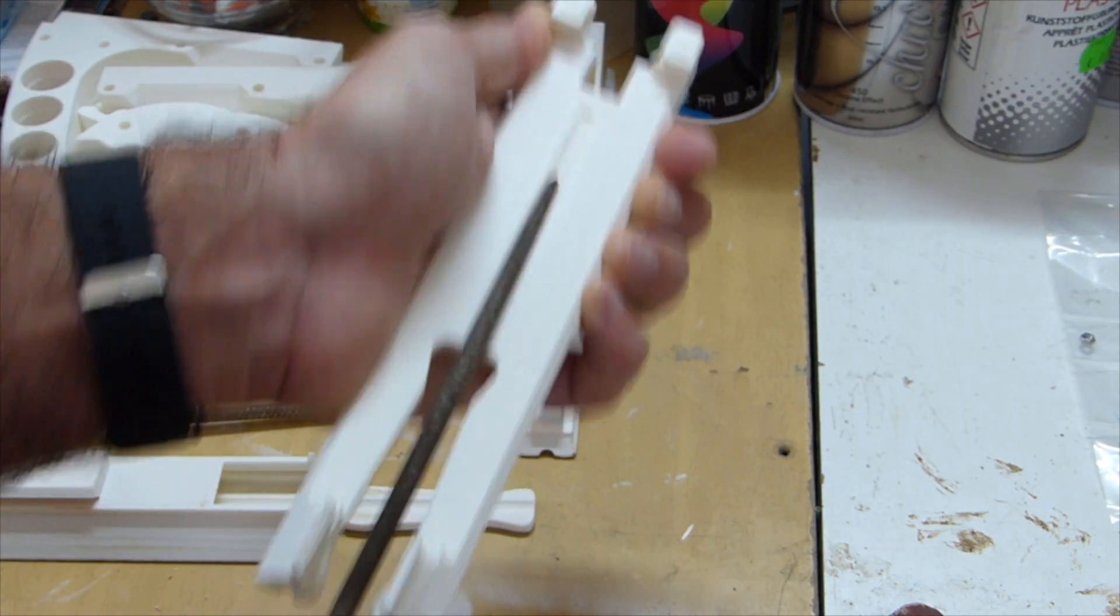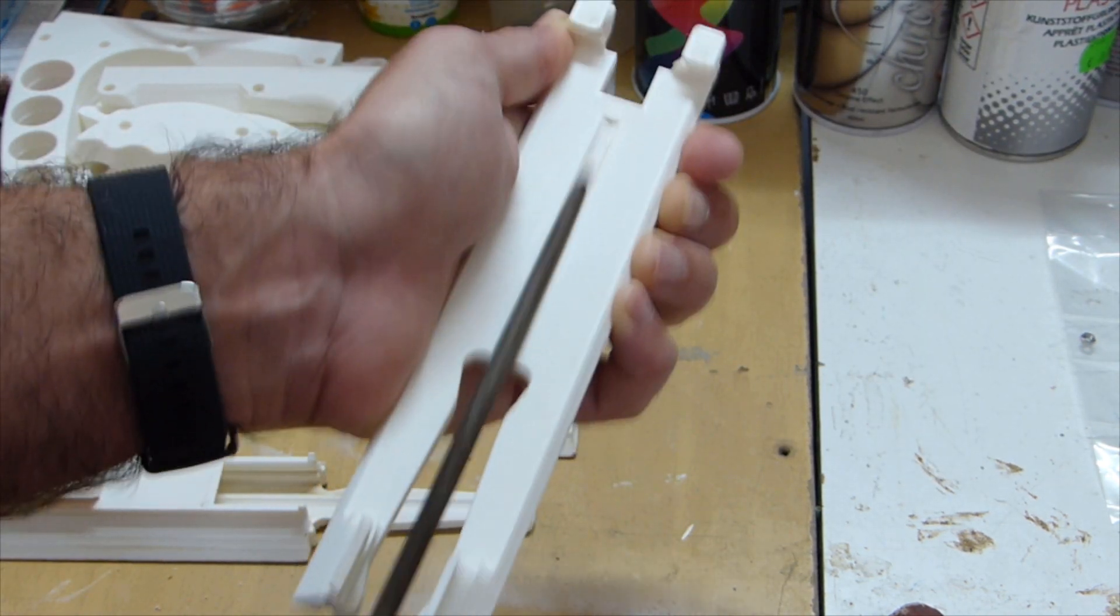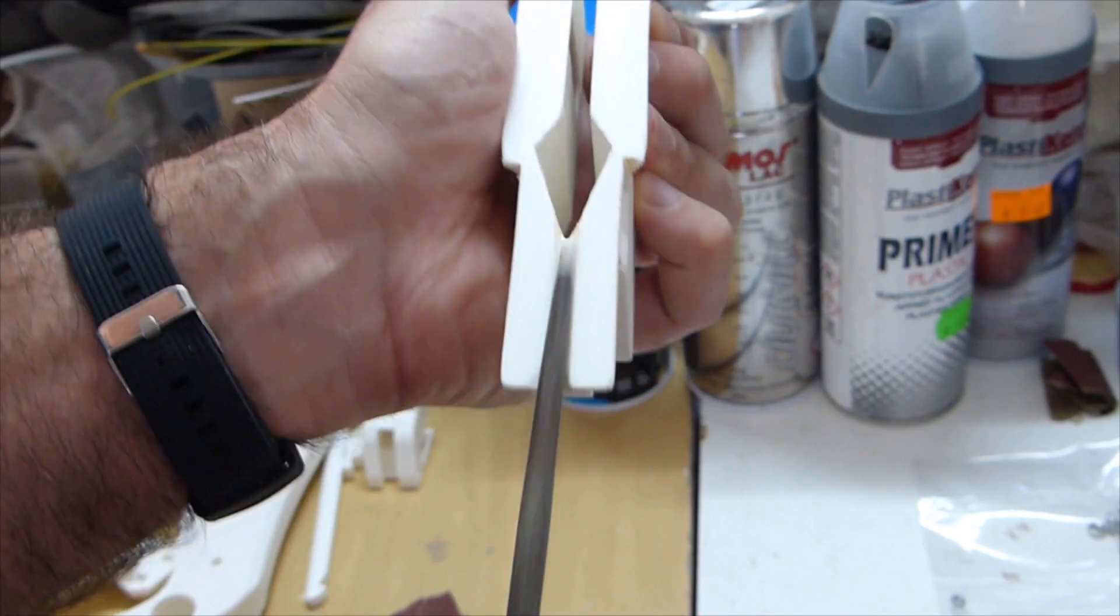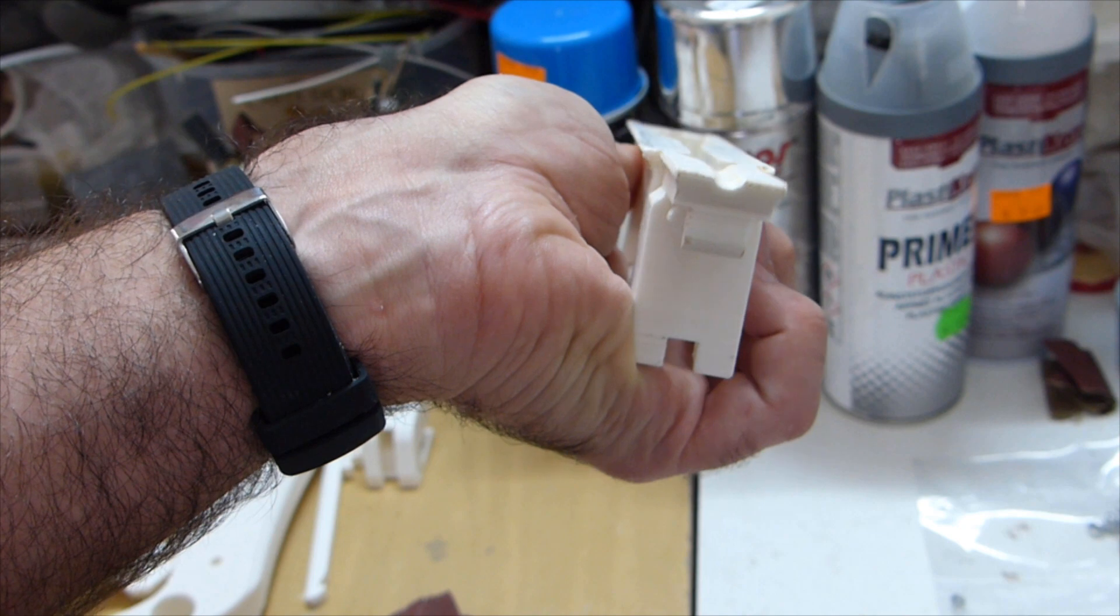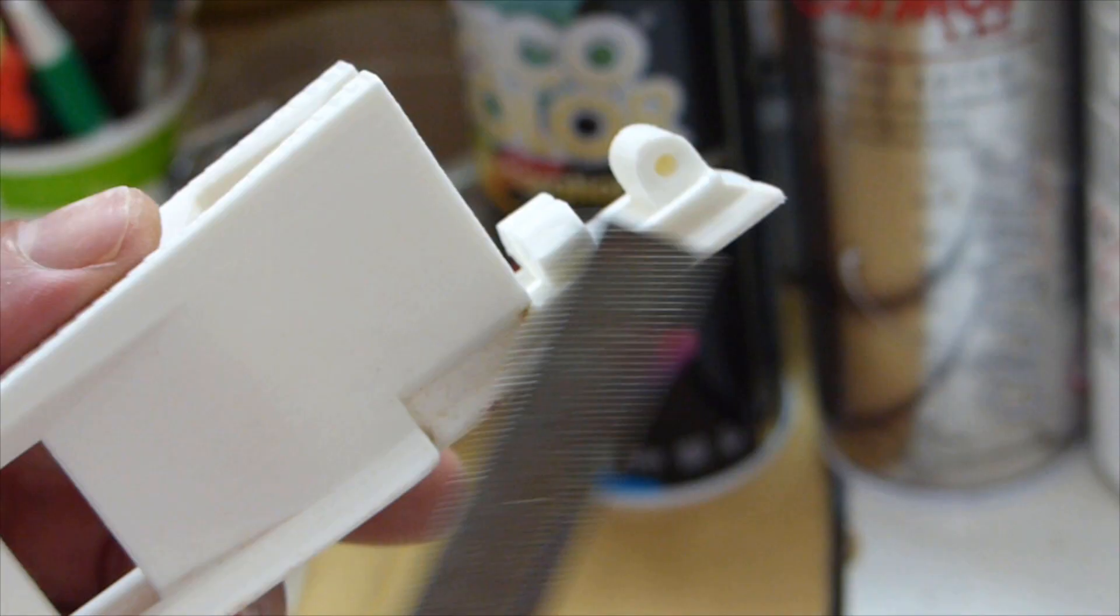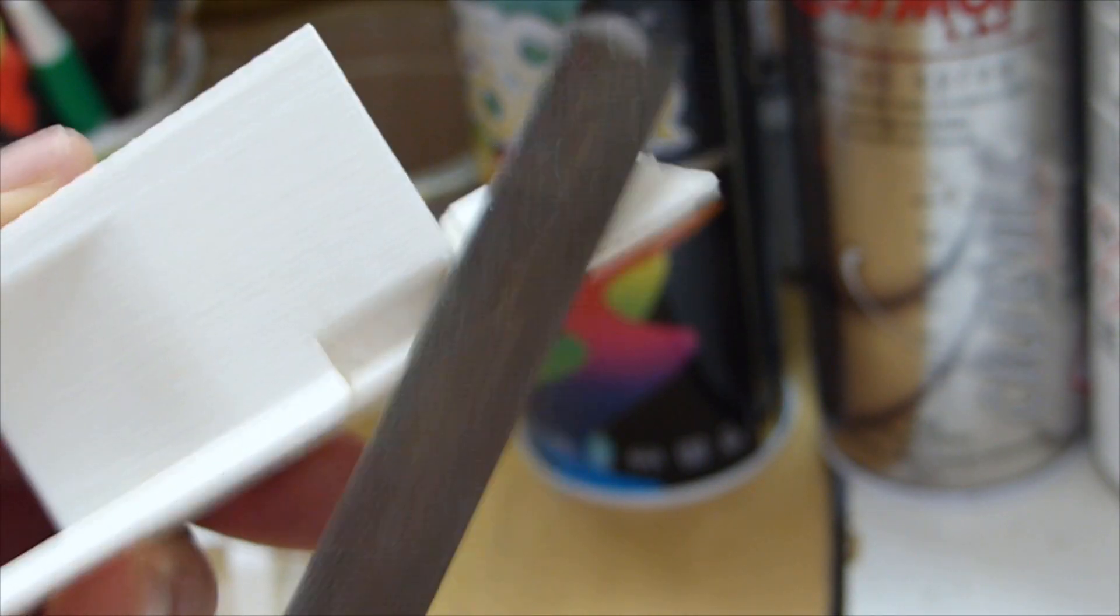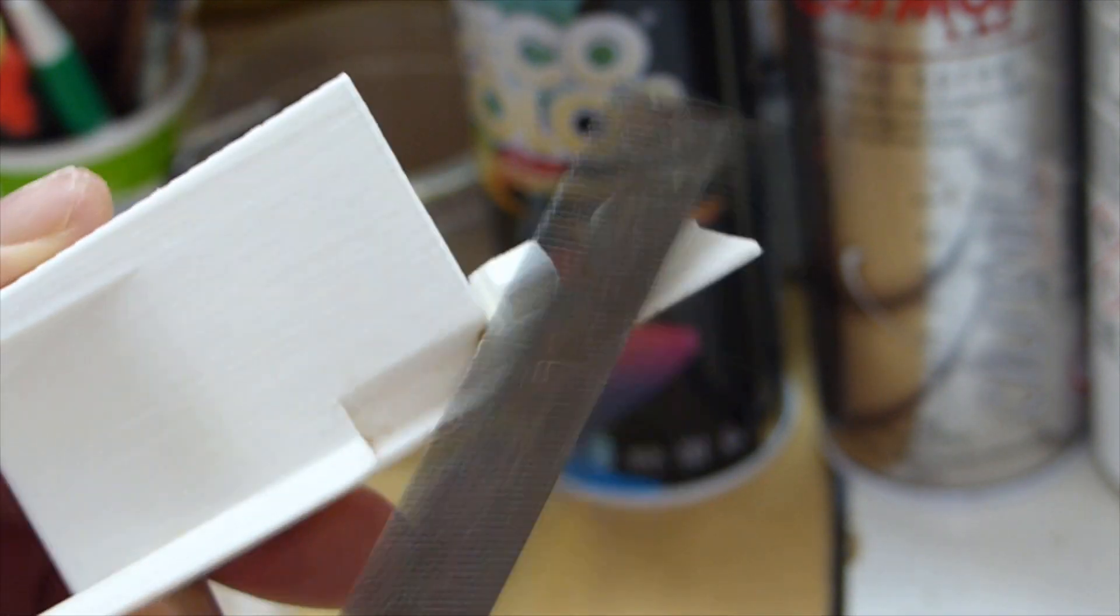The channel on the back part of the main body is also filed with a round file to smooth it. And the same is done with a round file on the top main body channel. Any edges that need to slide in a channel are smoothed with a flat file.